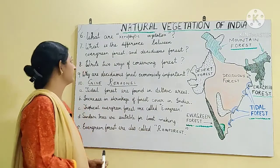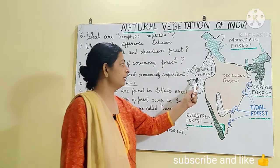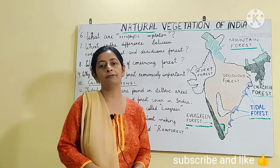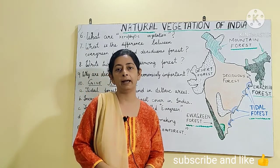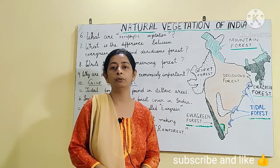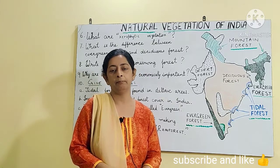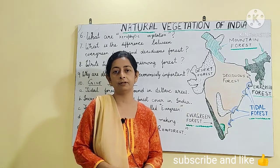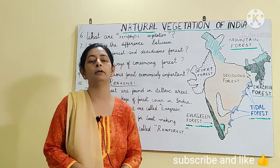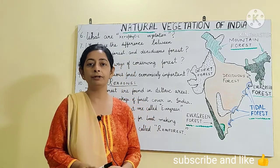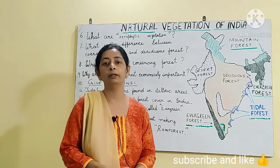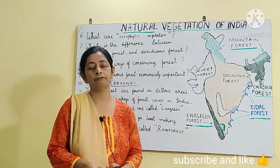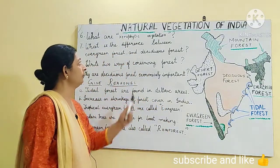Question number 6: what are xerophytic vegetation? Xerophytic vegetation is found in the desert or thorny scrub forest region. These comprise small plants, trees, or bushes which have no leaves or very thin leaves, but they have a thick stem with a waxy coat on their surface. They also have long roots which penetrate deep into the earth to absorb moisture, and they develop spines and thorns to reduce the loss of moisture.